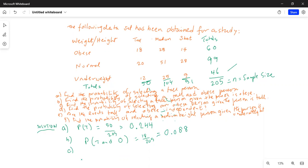Part C says find the probability of selecting a tall person given the person is obese. So tall person given the person is obese, this is probability of tall and obese divided by probability of obese, because obese happened first.